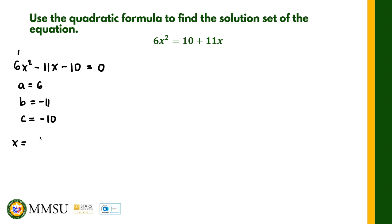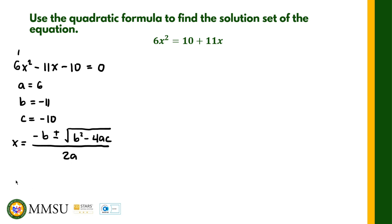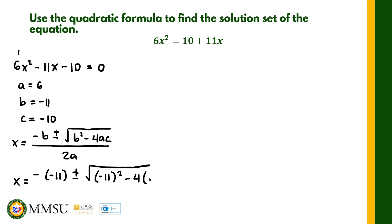We just need to plug in these values in the formula: x equals negative b plus or minus the square root of b squared minus 4ac, all over 2a. So if we plug in those values, we have x equals negative of negative 11, plus or minus the square root of negative 11 squared minus 4 times 6 times negative 10.